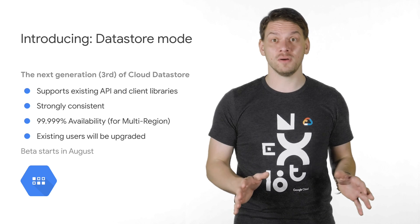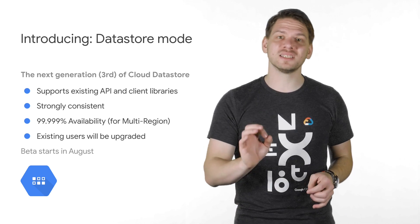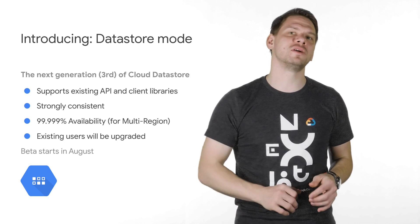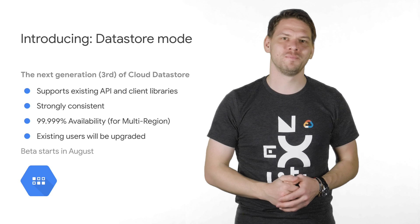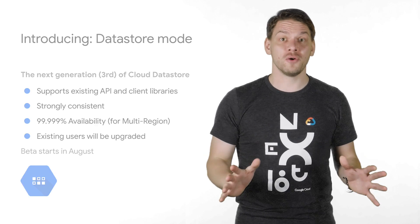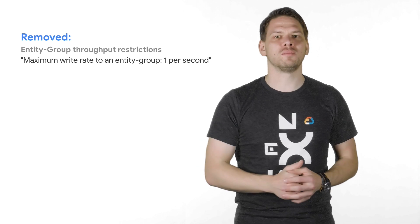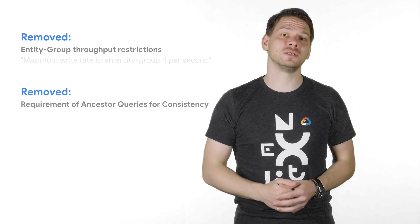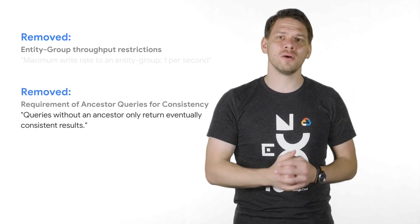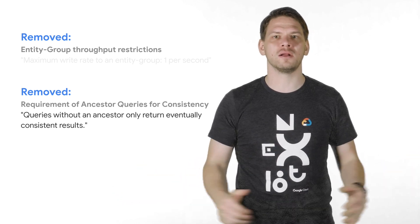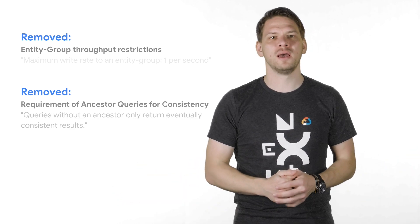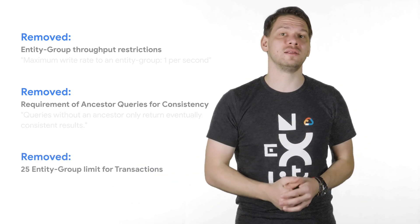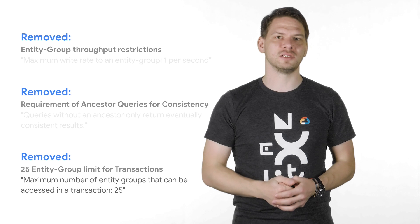As a side note, this will probably be the biggest live data migration with no downtime in history. Third, we are removing many of the Cloud Datastore restrictions: no more one write per second per entity group, no more ancestor-only queries for consistency — you now get strong consistency across all your data and complex queries, and no more 25 entity groups per transaction limitation.